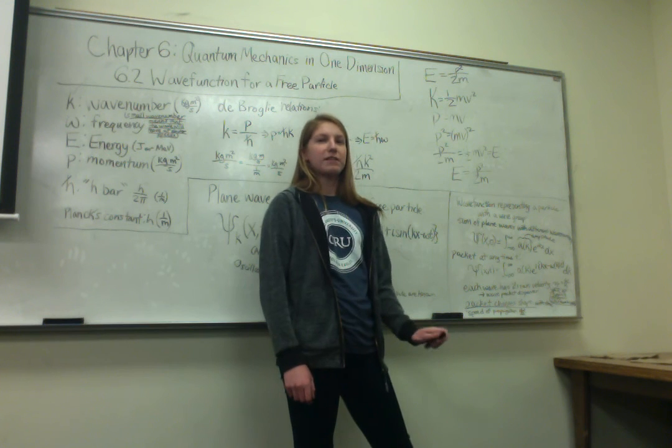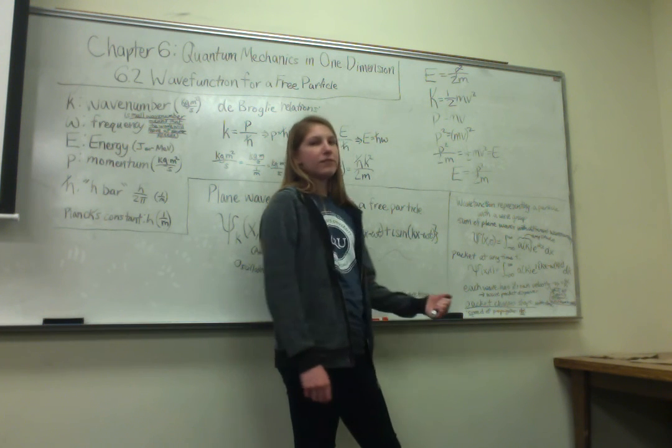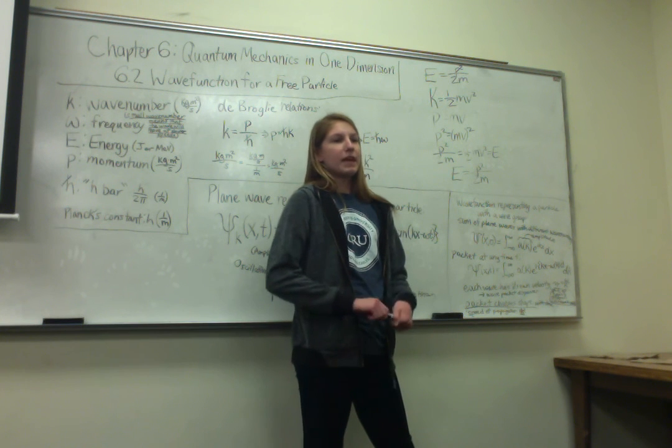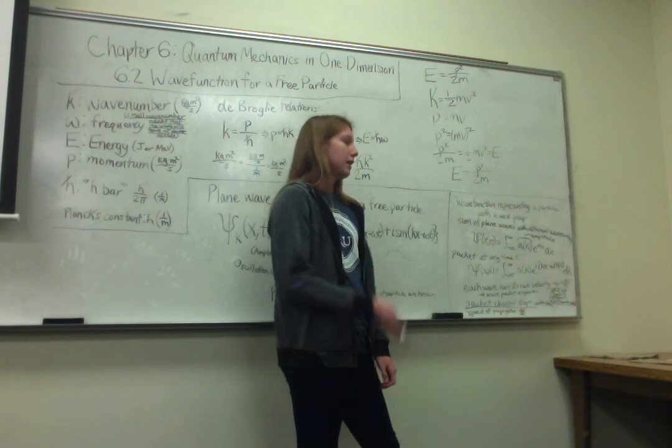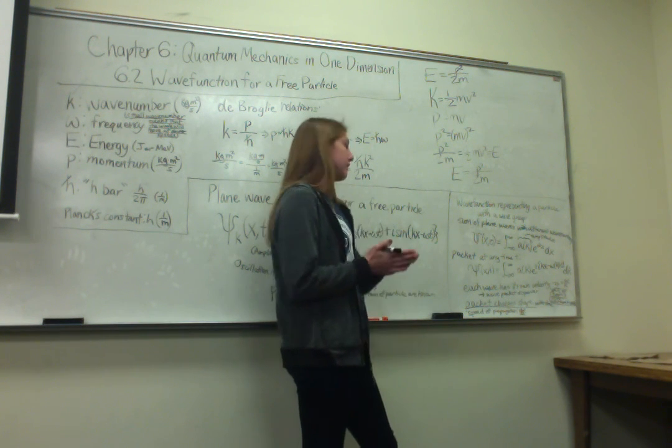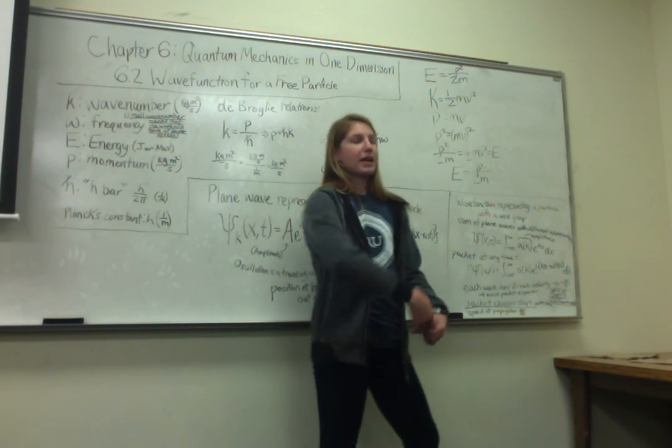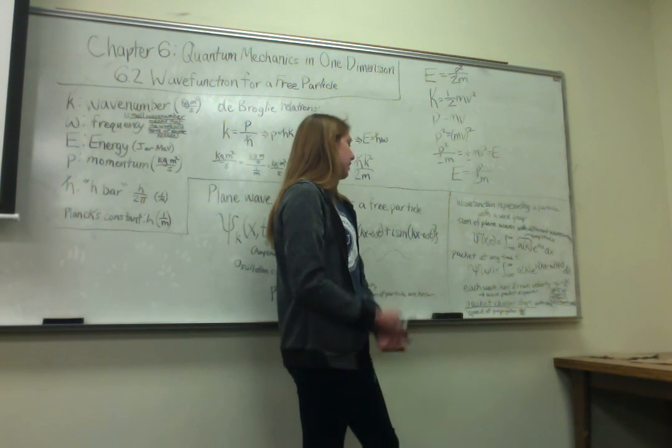So each different wave has a different wave number. Because of that, all the waves have different velocities. And as time goes on, because they have different velocities, the wave packet disperses, and the wave packet, the shape of it actually changes.